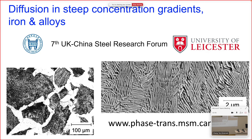Today I'm going to talk about a particular problem in the theory of transformations. We routinely try to calculate the growth rates of various transformation products — for example, allotriomorphic ferrite or pearlite — and because of the availability of popular software such as DICTRA and MatCalc, I want to point out that there is a very serious problem in the theory that is implemented to work out the growth kinetics of these phases.